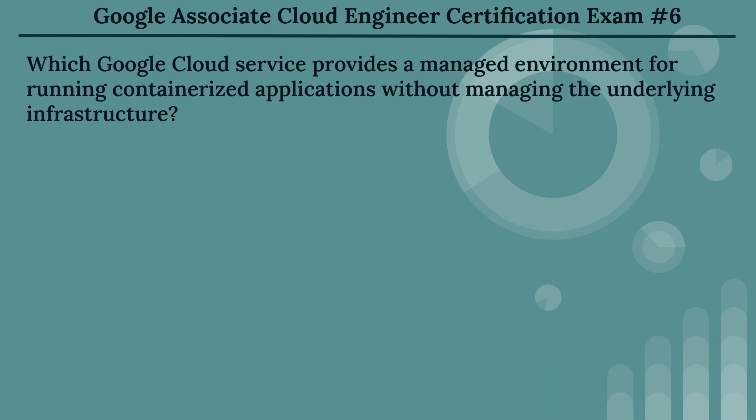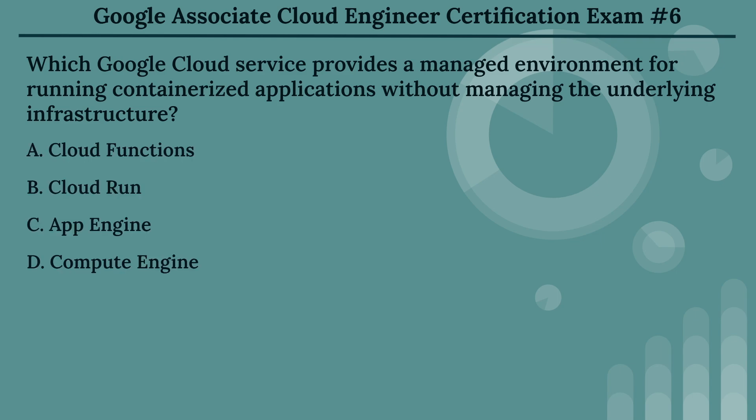The sixth question: which Google Cloud Service provides a managed environment for running containerized applications without managing the underlying infrastructure? The options are: Option A, Cloud Functions. Option B, Cloud Run. Option C, App Engine. Option D, Compute Engine.